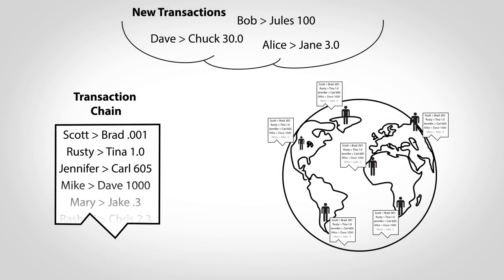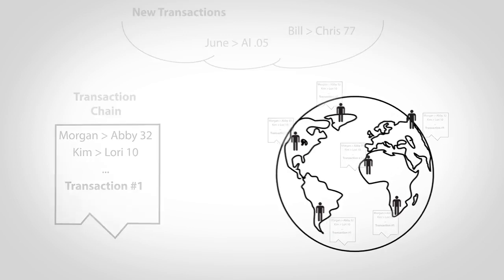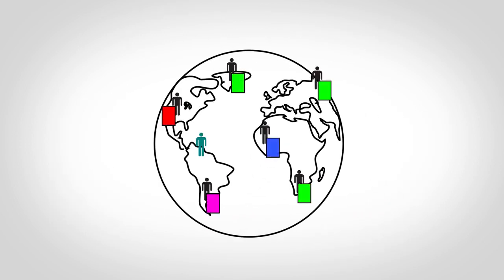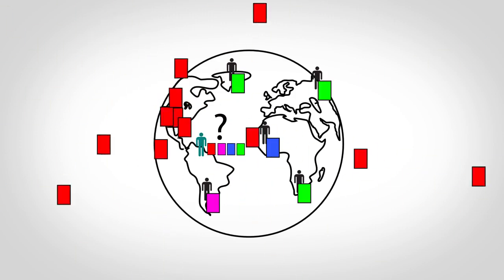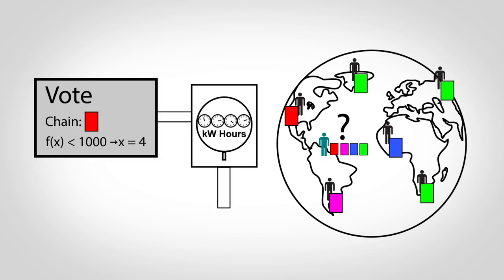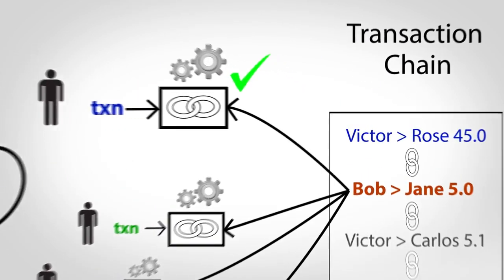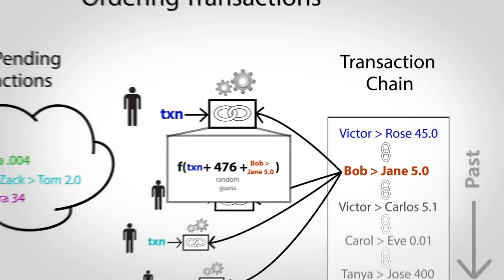So the lottery provides a way for the entire world to decide which transaction is next, but the math behind it also helps ensure everyone agrees about past transactions too. Suppose you're joining the network for the first time and request a copy of the transaction chain to get caught up, but receive several different versions — which one should you trust? Ideally, you would trust the one that the majority of people are using, but determining this on the internet is difficult. What would stop a single person from voting millions of times? Bitcoin prevents this by requiring people to solve math problems to vote, causing each vote to have a cost in computing power, making it unlikely that a single person or group could ever afford to outvote or outcompute the majority of users. The transaction ordering process actually provides the voting system — part of the input to the linking problem is a transaction from the end of a chain, so each guess is effectively a vote for that chain.